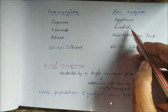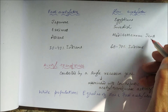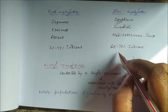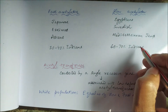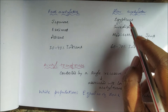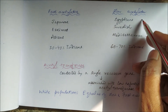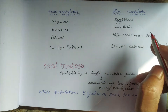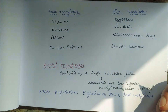Egyptians, Swedish people, Mediterranean Jews, and 60 to 70% of Indians are slow acetylators, meaning they have low acetyltransferase activity.